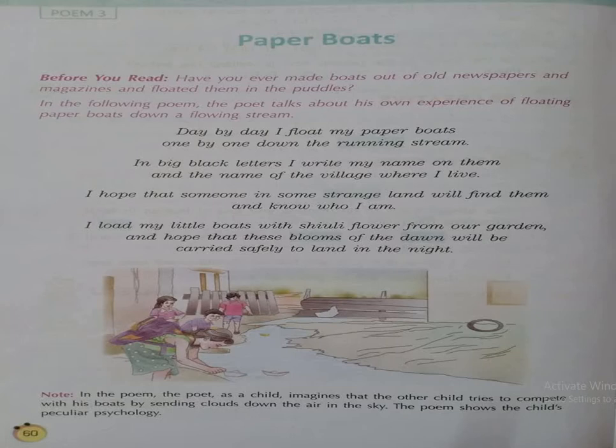He used to think that he is going to make the paper boat and that boat will be floating downstream, which any strange person will take notice of and then pick that boat up. That is why he used to write his name and the name of his village in black letters, so that whosoever is receiving that boat may know who made it and from where it came.